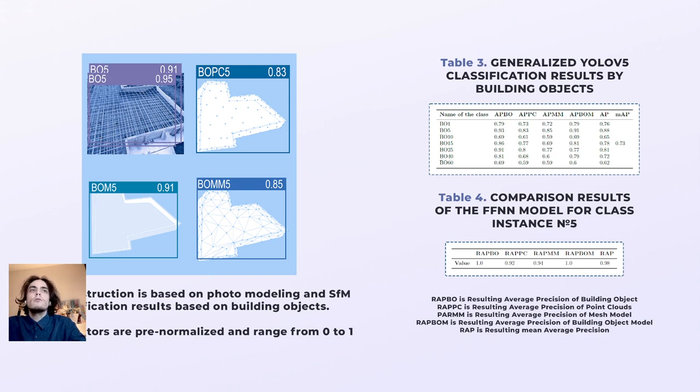The feed-forward neural network model was evaluated for establishing quality standards which can be applied to each stage of building object development individually. Examples of the findings and classification results are shown in Table 3 and Table 4.